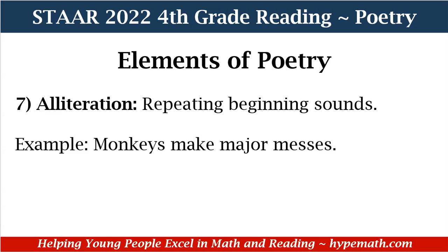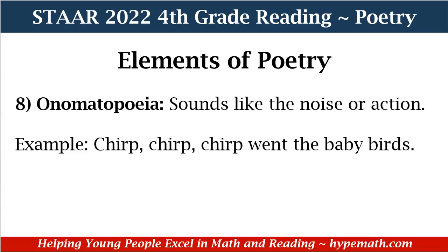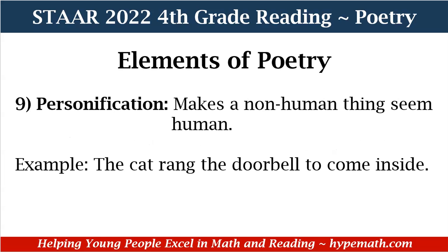Number eight is onomatopoeia — sounds like the noise or action. Our example says: 'Chirp, chirp, chirp went the baby birds.' Number nine is personification — makes a non-human thing seem human. Our example is: 'The cat rang the doorbell to come inside.'